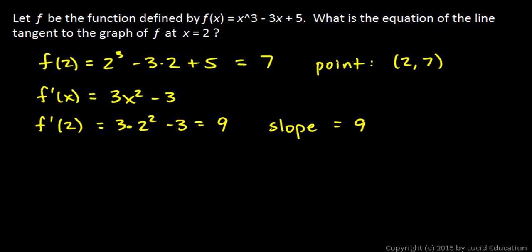So then we have a point and a slope. We can use the point-slope form of the equation for a line: y - y₁ = m(x - x₁), and we'll put in this value for m and these x and y values for x₁ and y₁.